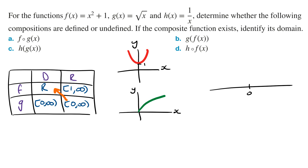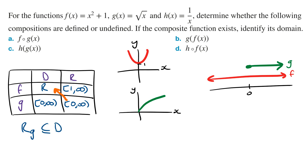The domain of f is all real numbers, and the range of g is from 0 to infinity. From this number line, we can see that the range of g intersects with the domain of f, which means the range of g is a subset of the domain of f. So we can write this as: the range of the inner function g of x is a subset of the domain of the outer function f of x. Therefore, f of g of x exists.